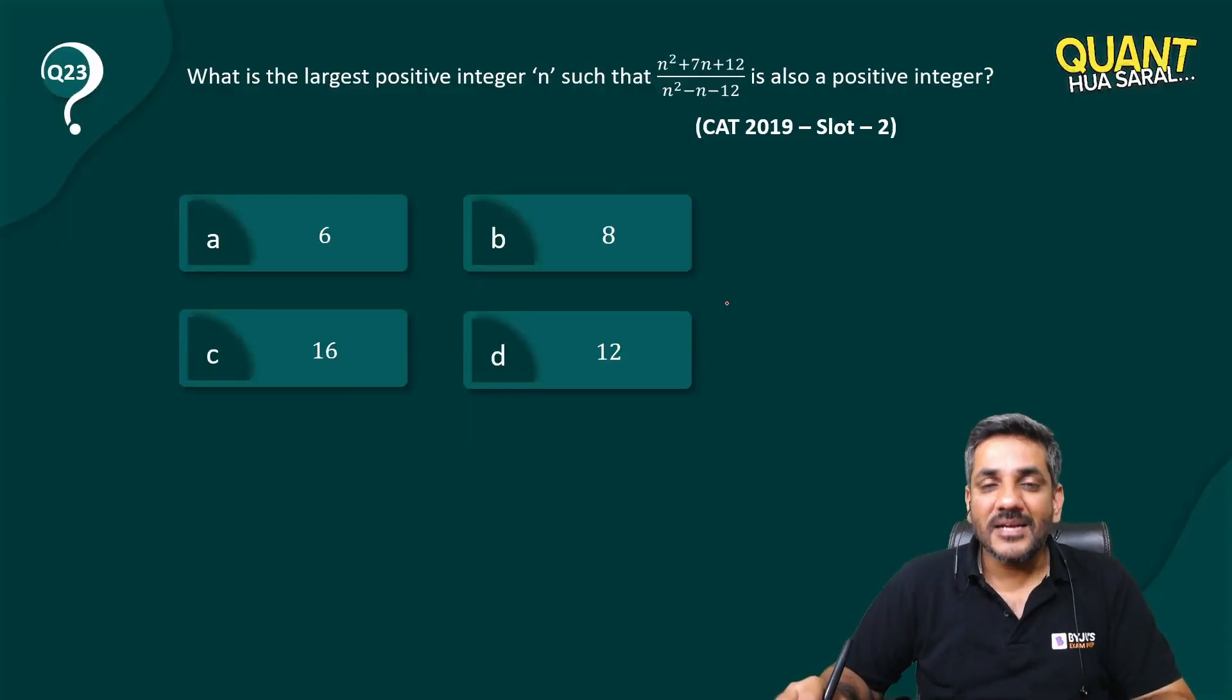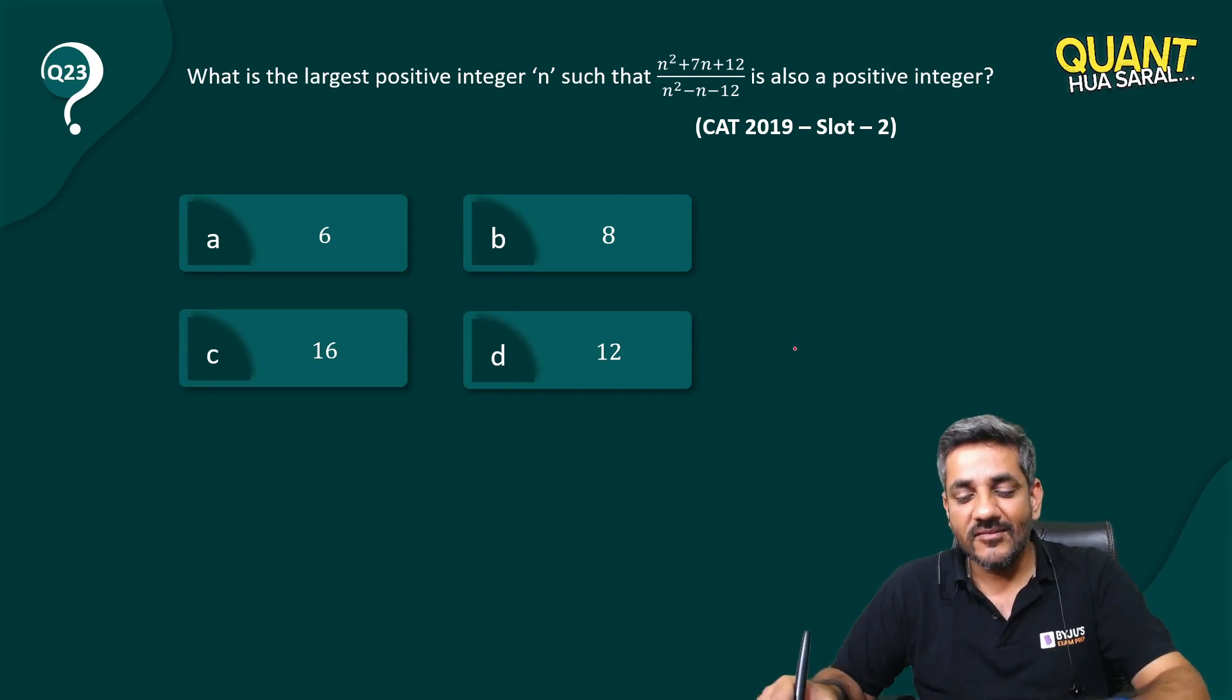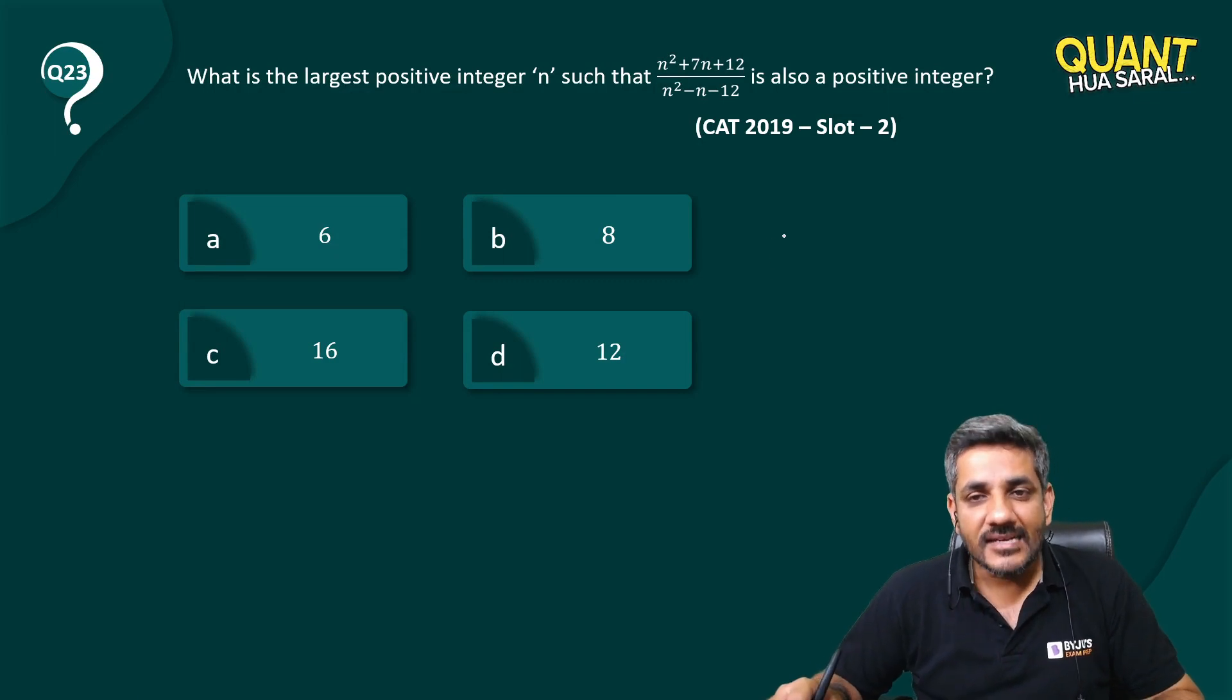Hi guys, welcome back to question number 23 from the series. Once again I have taken a question from algebra. What is the largest positive integer n such that this expression is also a positive integer?